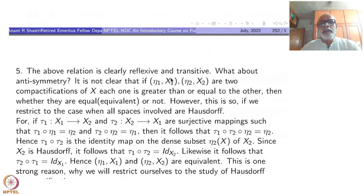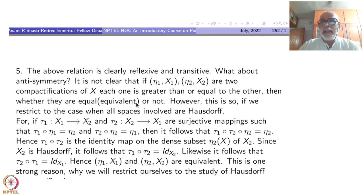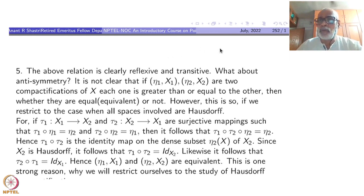What about anti-symmetry? It is not clear that if (η₁, X̃₁) and (η₂, X̃₂) are two compactifications of X, each one greater than or equal to the other, whether they are equivalent or not. Equality here means equivalent — we need to prove this. Unless you prove this, you cannot really call it a partial ordering. Something x ≥ y and y ≥ x should imply x = y.